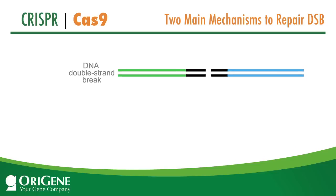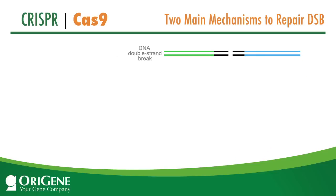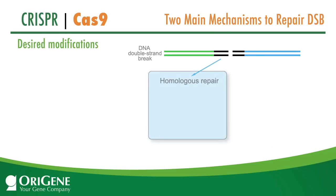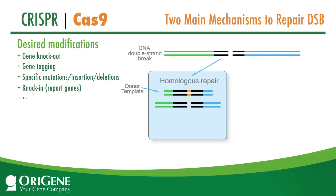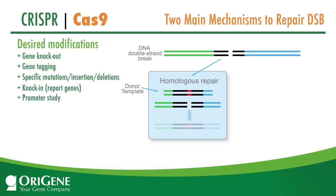Two types of editing are commonly used. Homologous recombination utilizes a repair template — the desired changes are flanked by left and right homologous arm sequences. Upon double crossover, the desired change is integrated into the genome. Applications include gene knockout, gene tagging, and site-specific mutagenesis.